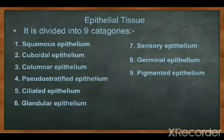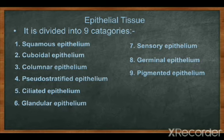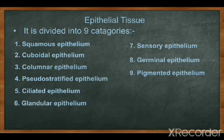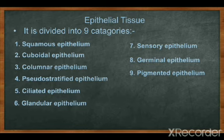The first one is epithelial tissue. The word 'epithelial' is basically derived from the Greek word composed of two words: 'epi' and 'thelial'. Epi means above and thelial means to grow. It means this type of tissue always grows upon another tissue. This is the definition of epithelial tissue.